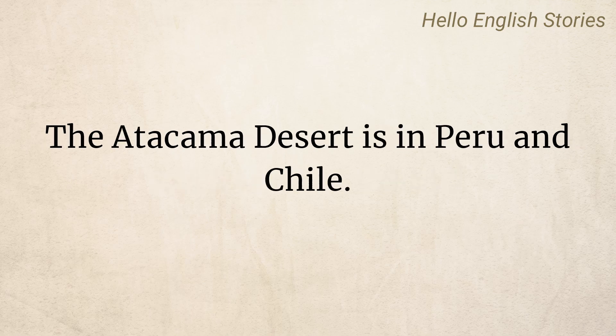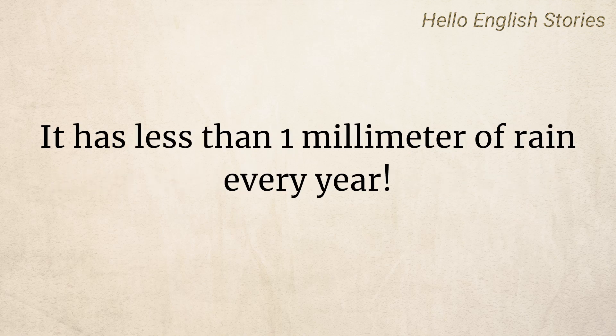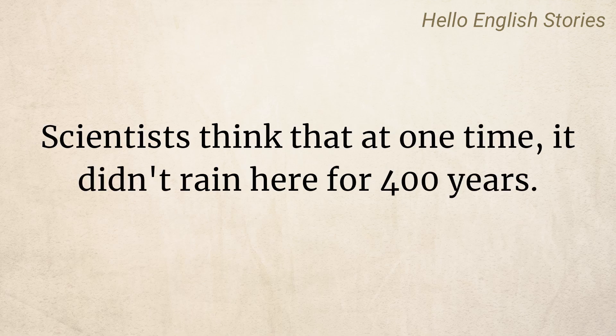The Atacama Desert is in Peru and Chile. It's not very hot, and it's one of the oldest and driest deserts on Earth. It has less than 1 mm of rain every year. Scientists think that at one time, it didn't rain here for 400 years.